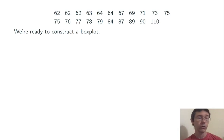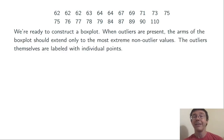Let's go ahead and construct a box plot for this data. The idea is that when you have an outlier, the arms of the box plot should extend only to the most extreme values that are not outliers.